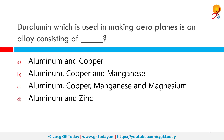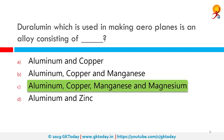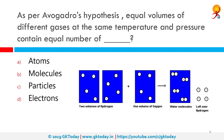Duralumin, which is used in the making of aeroplanes, is an alloy consisting of what? The correct answer is aluminium, copper, manganese, and magnesium. Aircraft manufacturers use high-strength duralumin, principally alloy 7075, to strengthen aluminium aircraft structures. Aluminium alloy 7075 has copper at 1.6%, magnesium at 2.5%, and zinc at 5.6% added for ultimate strength, but the copper content makes it very difficult to weld.